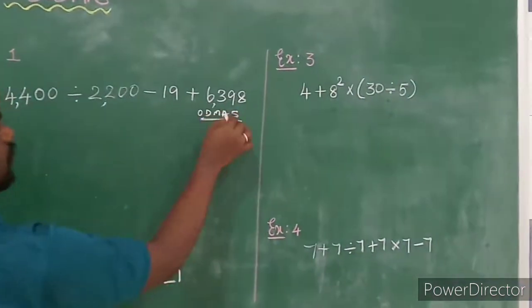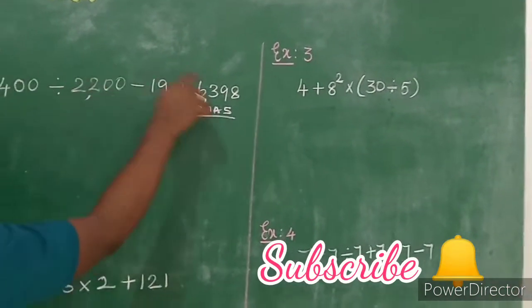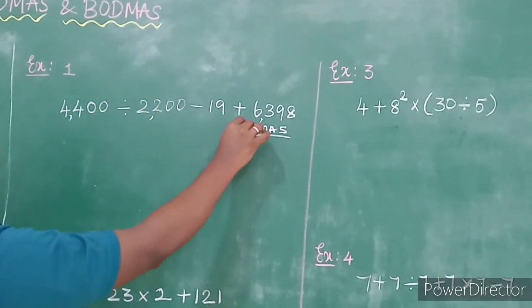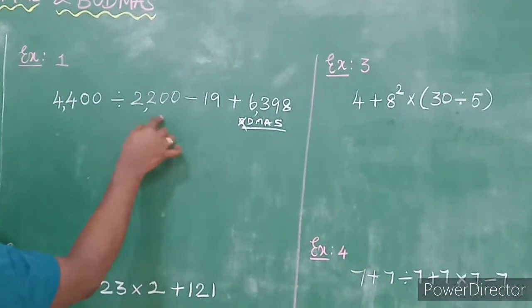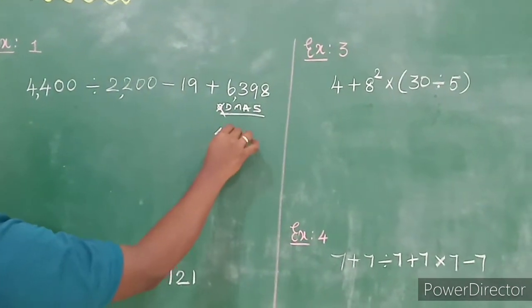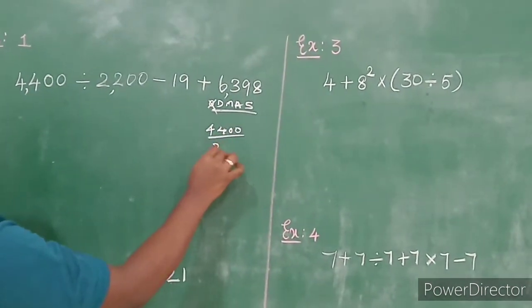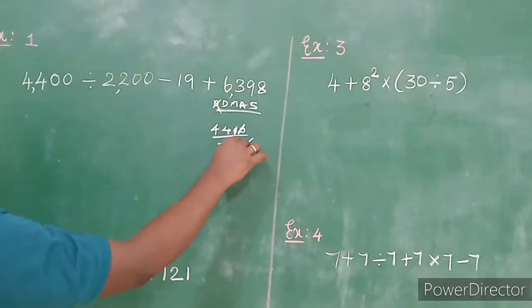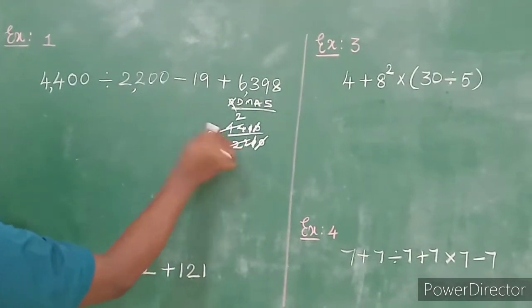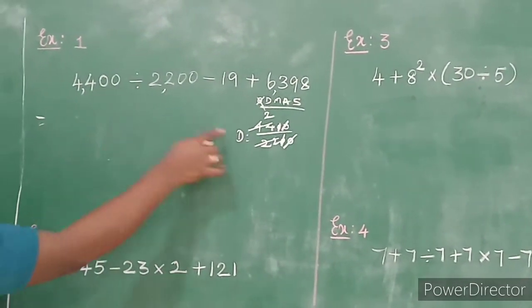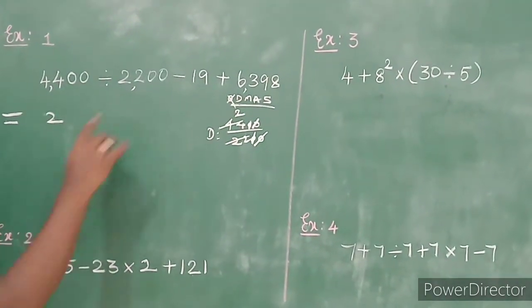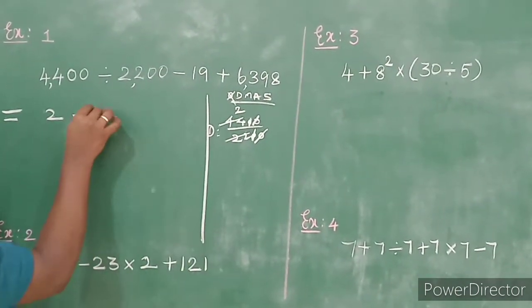So using ODMAS: O — is there any order, any power or square root? No, so leave it. D — is there any division? Yes. So divide 4400 by 2200. Two zeros cancel, and 44 divided by 22 gives 2. Division is finished, so write 2 as the result.